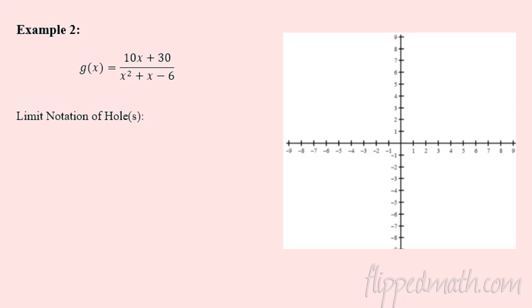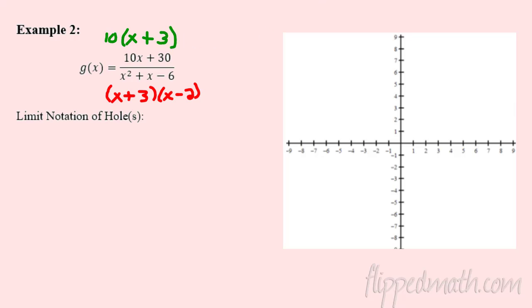Without seeing the graph, let's see if we can answer these and come up with our notation. On the bottom, let's factor this out — what multiplies to 6 and adds or subtracts to 1? That's plus 3 and minus 2. On top, we can factor out a 10, and what's left is (x + 3). Remember what causes the hole — it's when factors cancel. So at x = -3, I'm going to have a hole.